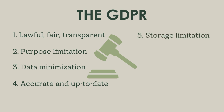Principle five, much like the third principle about data minimization, sets out an important requirement around storage limitations — that organizations would do well to adopt more in the true spirit of its intentions, rather than just its minimal legal formulations. The idea is easy enough to understand: collected personal information should not be kept any longer than absolutely necessary, after which it should be deleted, purged, or at the very least anonymized so it can no longer be tied to any individual and therefore no longer counts as personal information.